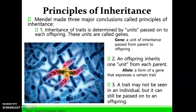An allele is a form of a gene that expresses a certain trait — that's what we obtain from each parent. These can be the same or different. The third principle of inheritance that Mendel established was that a trait may not be seen in an individual, but it can still be passed on to an offspring.